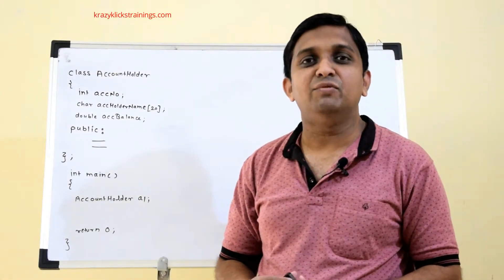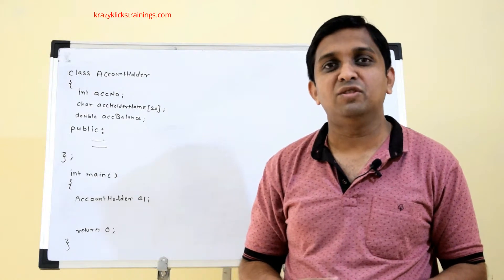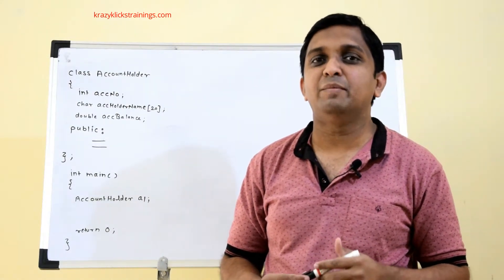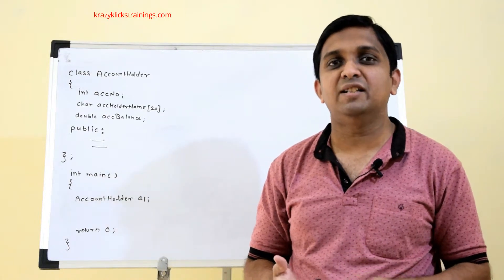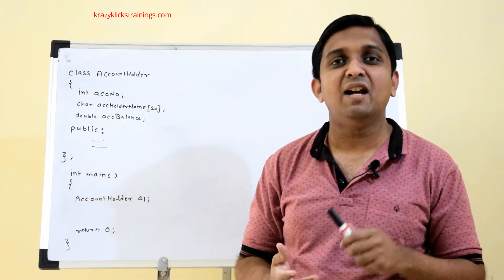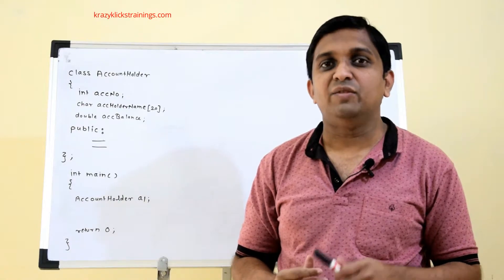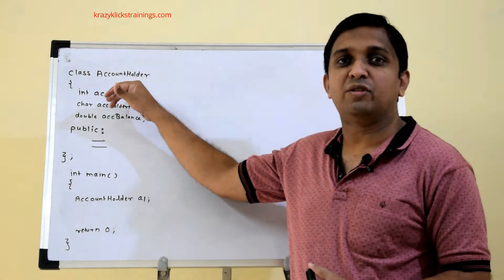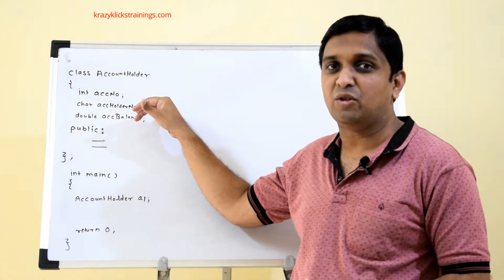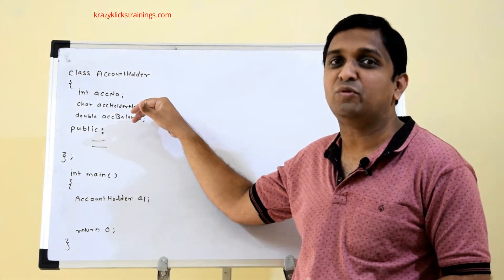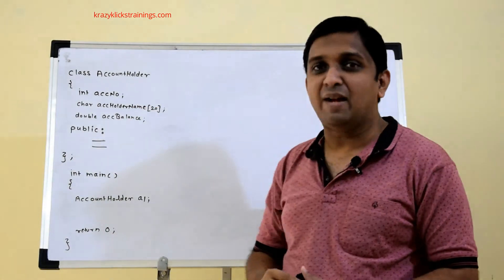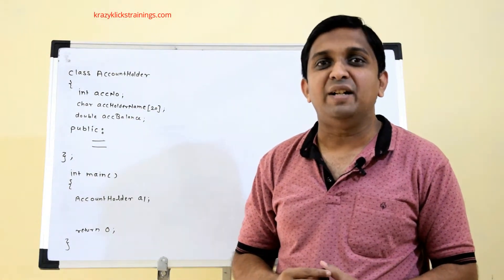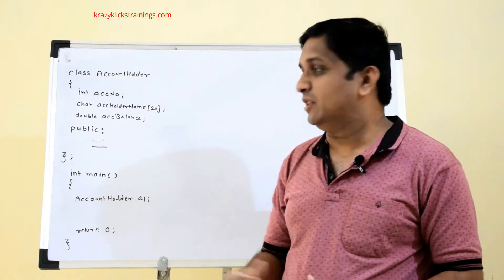In the last video we implemented an AccountHolder class with data members: account number, account holder name, and account balance. The size of the AccountHolder class is 4 bytes for account number, 20 bytes for name (array of 20 characters), and 4 bytes for balance — so 4 + 20 + 4 equals 28 bytes.